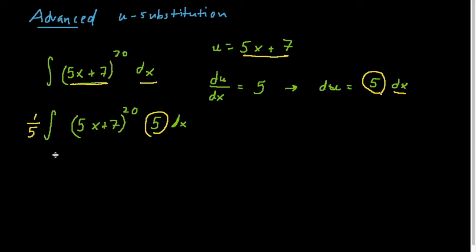Now we can rewrite this integral with u and du. So we have u to the 20th power because u is 5x + 7. And then 5 dx is equal to du with this 1/5 on the outside that we had to add in.